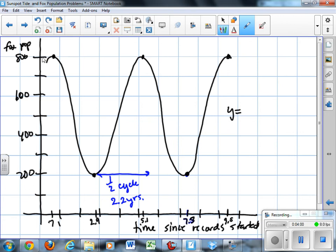Sinusoidal axis is halfway between 800 and 200, so that would be at 500. So there's our sinusoidal axis. The amplitude would be between 500 and 800, so that's 300.